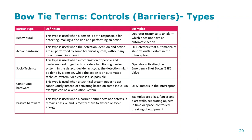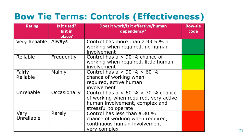Regarding effectiveness color-coding: if a control is always there, more than 99.5% reliable, with no human involvement, it's very reliable and shown in green. If it's unreliable — less than 30% chance of working when required, continuous human involvement, and very complex task — it would be a red barrier. This color coding will be used in the case study.